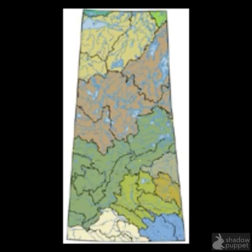If we look closer at Saskatchewan, it's divided into 29 smaller watersheds with 10 major basins in the province. Some of these basins include the South Saskatchewan River, the North Saskatchewan River, Assiniboine River, Coppell River, and Lake Winnipegosis.